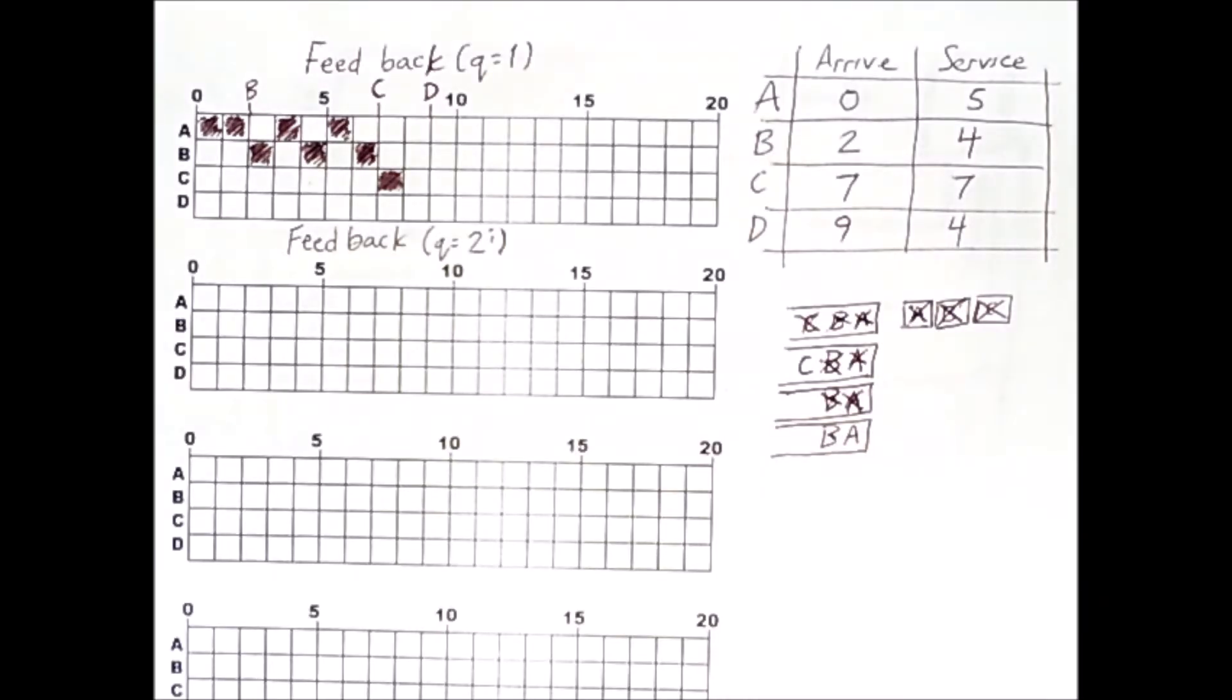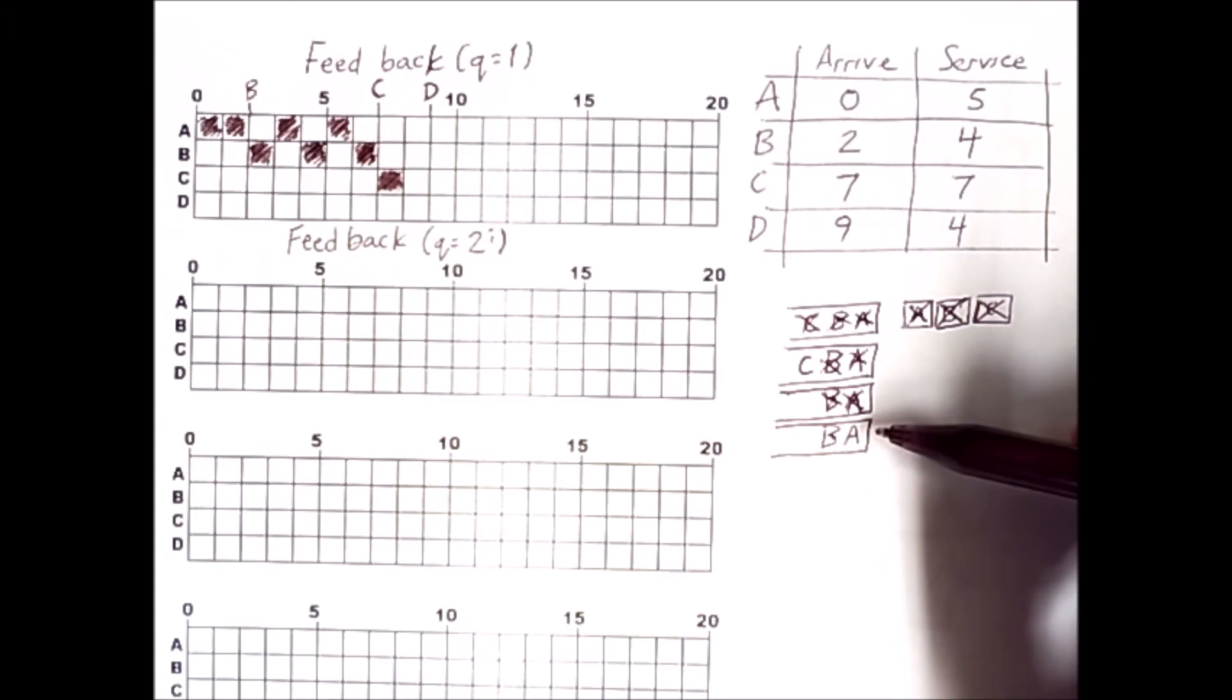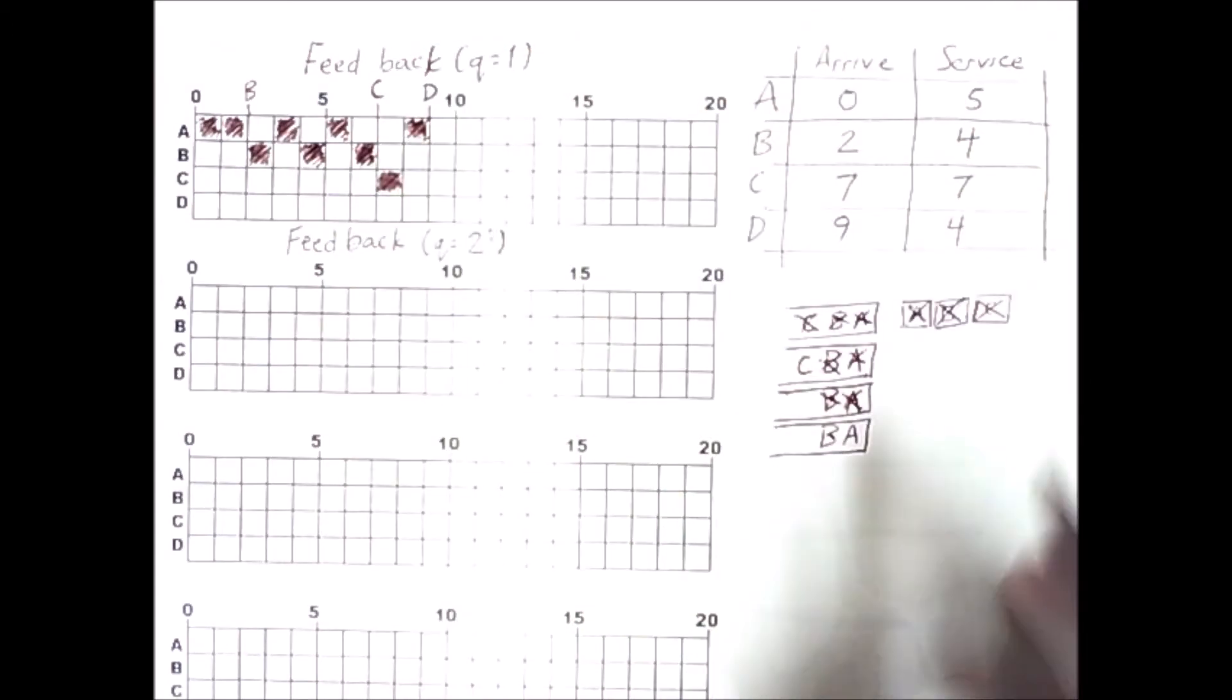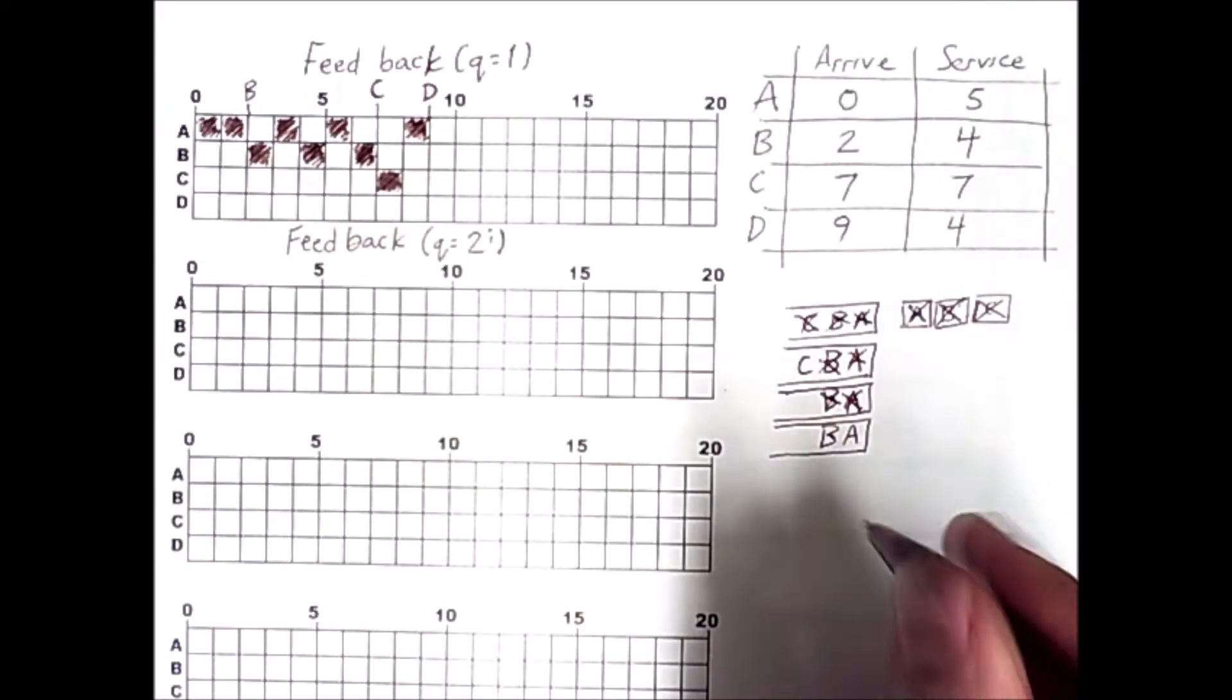Now, this is going to go back to our convention from before. I said that no process, which was just kicked off the processor, is allowed to immediately run again. So even though C is in a queue, which should allow it to run before A or B, it just got kicked off the processor. So we have to run something else. So we'll actually run A next. And at this point, A has actually reached its service time: 1, 2, 3, 4, 5. So A is done.